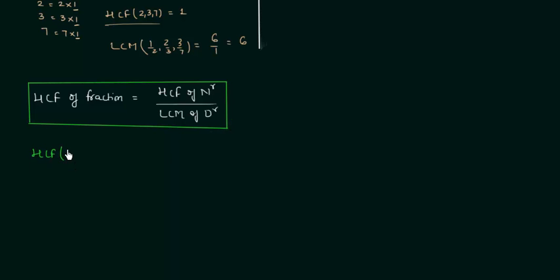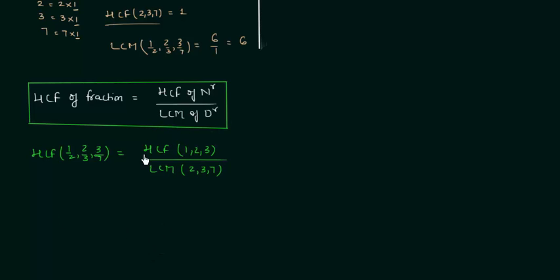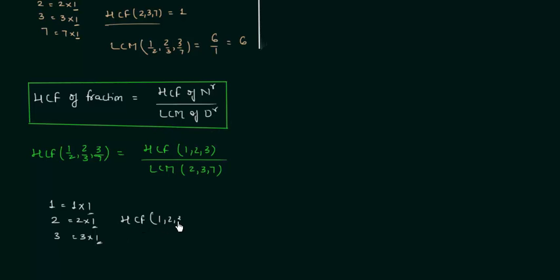So HCF of 1/2, 2/3, and 3/7 requires us to find HCF of the numerators 1, 2, 3. Using prime factorization: 1 = 1×1, 2 = 2×1, 3 = 3×1. The common factor with the greatest index is 1, so HCF of 1, 2, 3 equals 1.